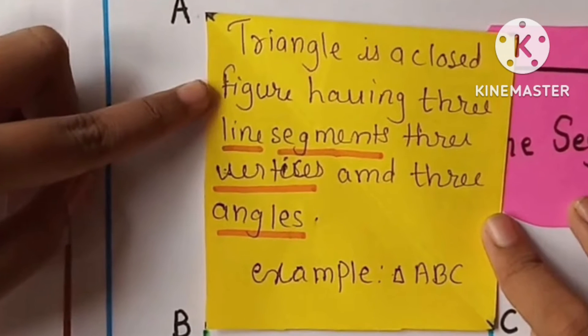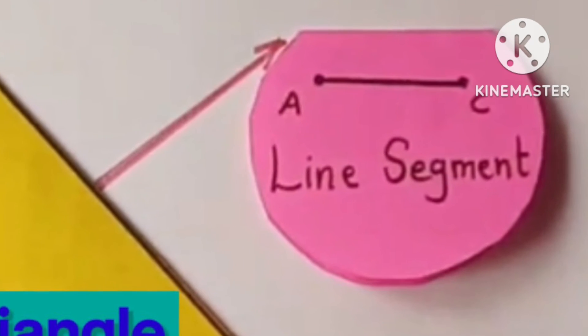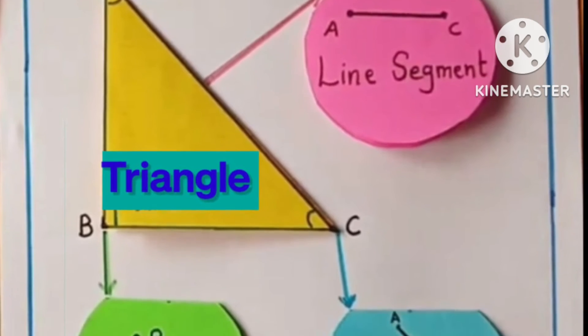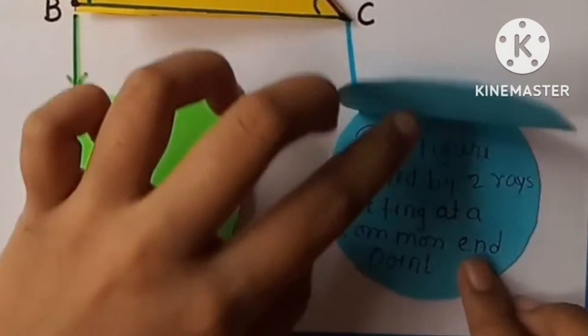Now let's see the parts of triangle. The first one is line segment, and here is the definition of line segment. The second part is angle, and here is the definition of angle.